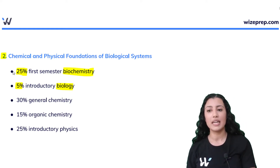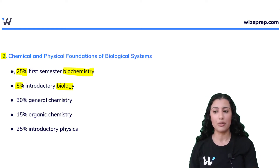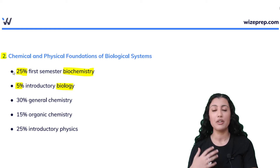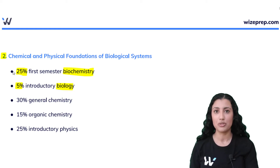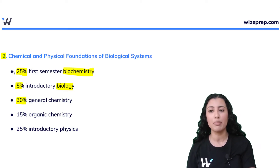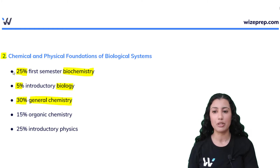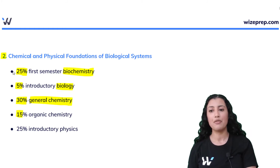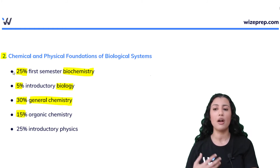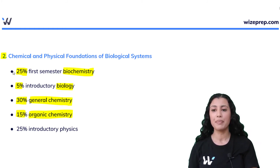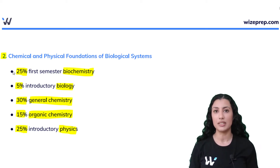This section is made up of more general chemistry — general chemistry is the largest component here. We have 30% of the questions from general chemistry, 15% from organic chemistry, and 25% of questions related to physics.